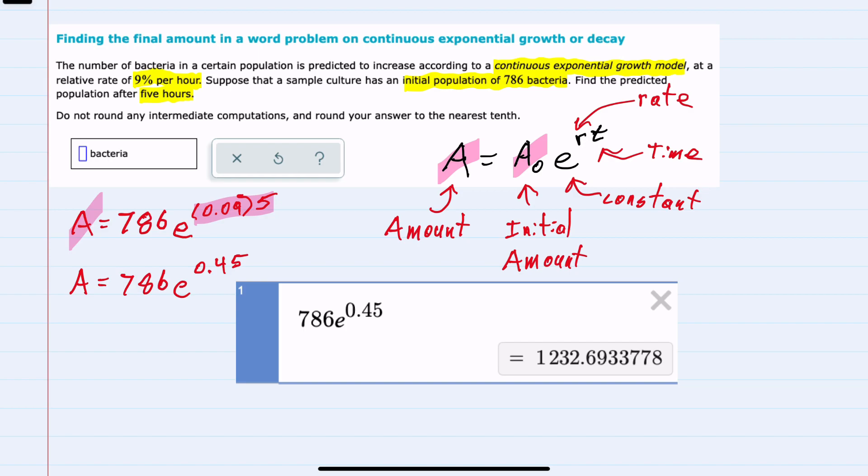plugged in this expression exactly as it is, rounding our answer to the nearest tenth. We would round up, and we could say after 5 hours, we would have 1,232.7 bacteria as a result of that continuous growth.